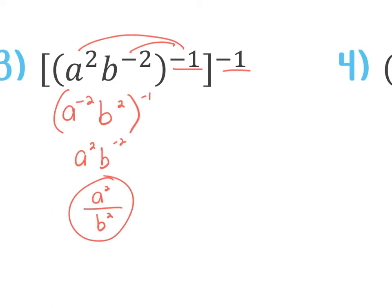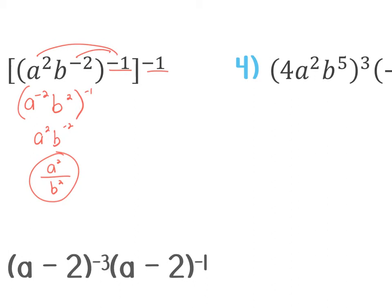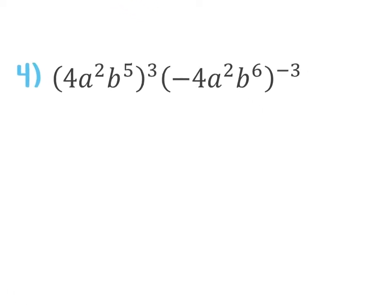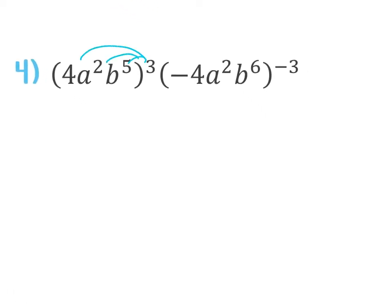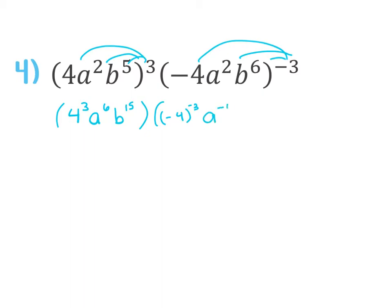b is the only one with the negative, so the a squared stays in the top and the b squared moves to the bottom — and there's my answer. Number 4: distribute the exponents first. This 3 goes to all three places — this is 4 to the 3rd, a to the 2nd raised to the 3rd, but I multiply them, so it's a to the 6th. b to the 5th raised to the 3rd is b to the 15th. Second set of parentheses: distribute that in, and this is negative 4 to the negative 3rd. Then a to the 2nd raised to the negative 3 is a to the negative 6th. b to the 6th raised to the negative 3 is b to the negative 18th.